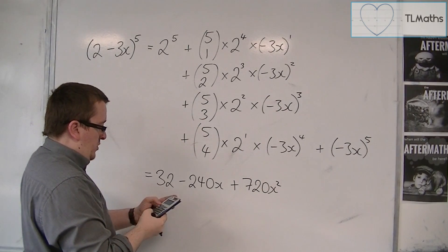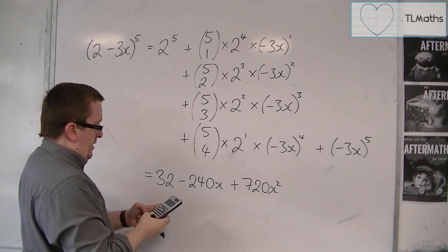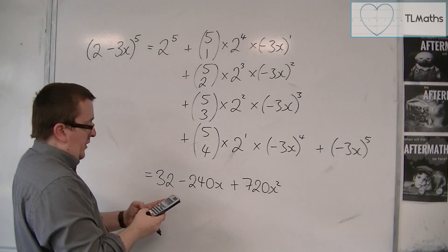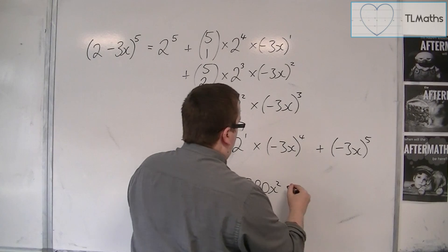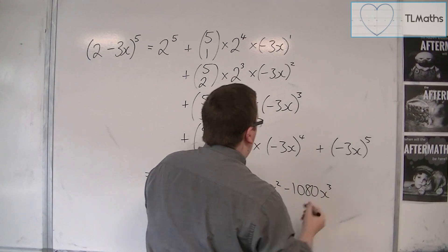Then we have 5 choose 3, times 2 squared, times by minus 27, which is minus 3 cubed, so minus 1080x cubed.